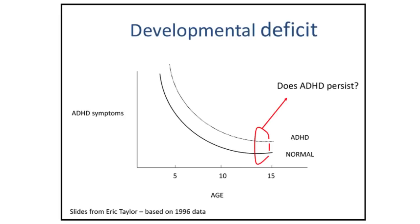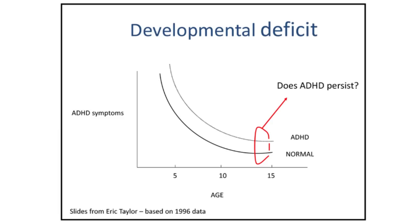Eric Taylor pointed out that as you get older you naturally do have more self-control and are more attentive — that's true whether you have ADHD or not. So you really need to compare relative to your peer group. What Eric showed was more or less two parallel lines — for many people the difference between cases and controls is retained at different ages. You have to think of it relative to your peer group and how you're functioning in relation to your peers.